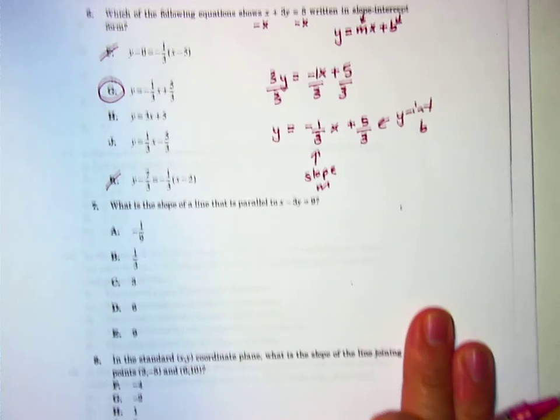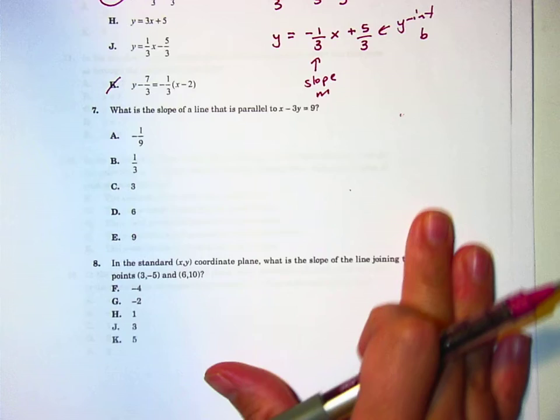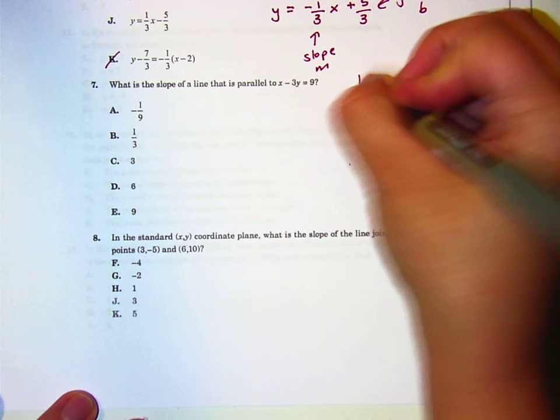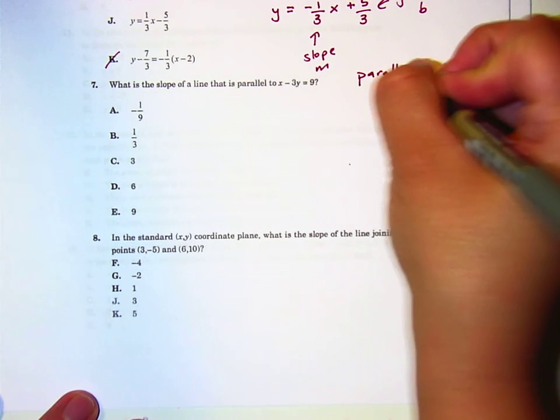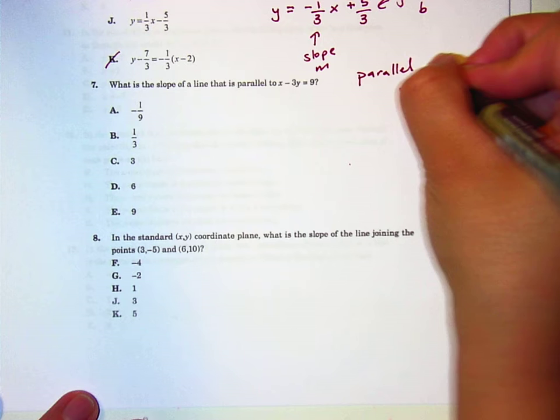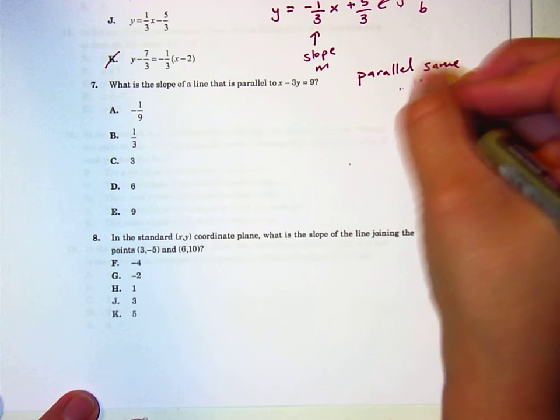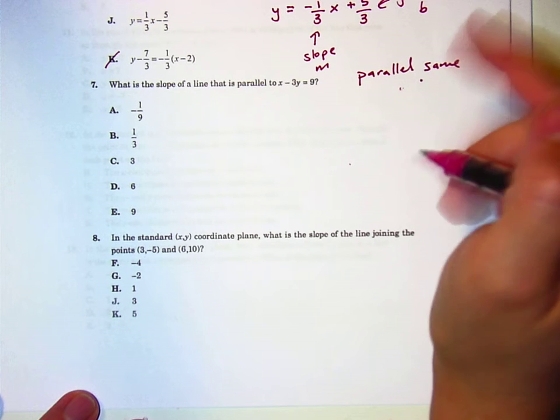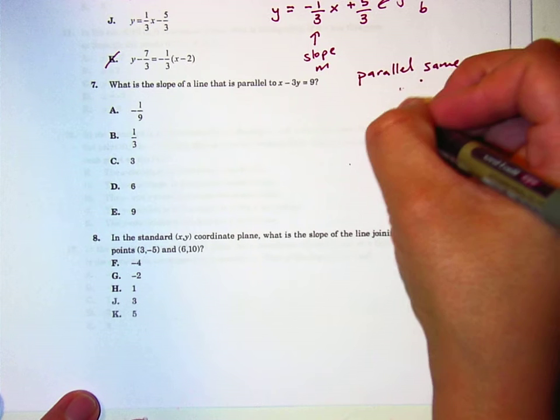Okay. Seven. What is the slope of a line that is parallel to that? Okay, so parallel lines have the same slope. Have the same slope. And perpendicular, by the way, have opposite reciprocals. That means you flip the fraction and add a negative sign.